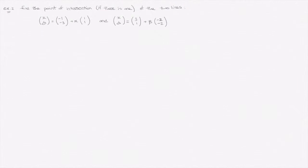The first thing we're going to do is write each of these two line equations in their parametric form. So the first line would be x = -1 + α and y = -3 + α. Those are the two parametric equations of that first line.